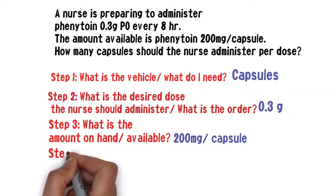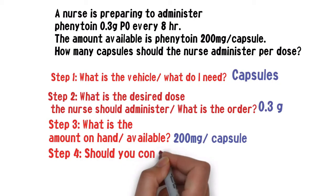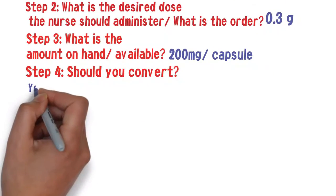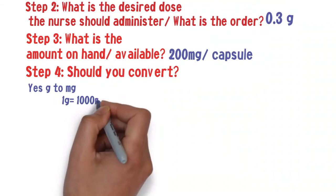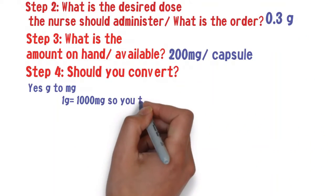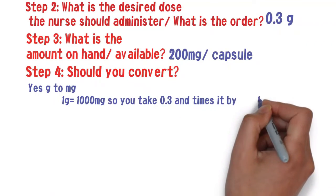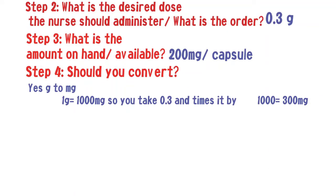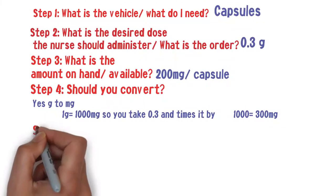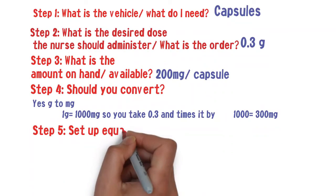Step three: what is the amount on hand or available? That answer is 200 milligrams per capsule. Step four: check if you need to convert. The answer is yes, because the order is in 0.3 grams but what's available is in 200 milligrams. Looking at our conversion chart, one gram equals 1000 milligrams.